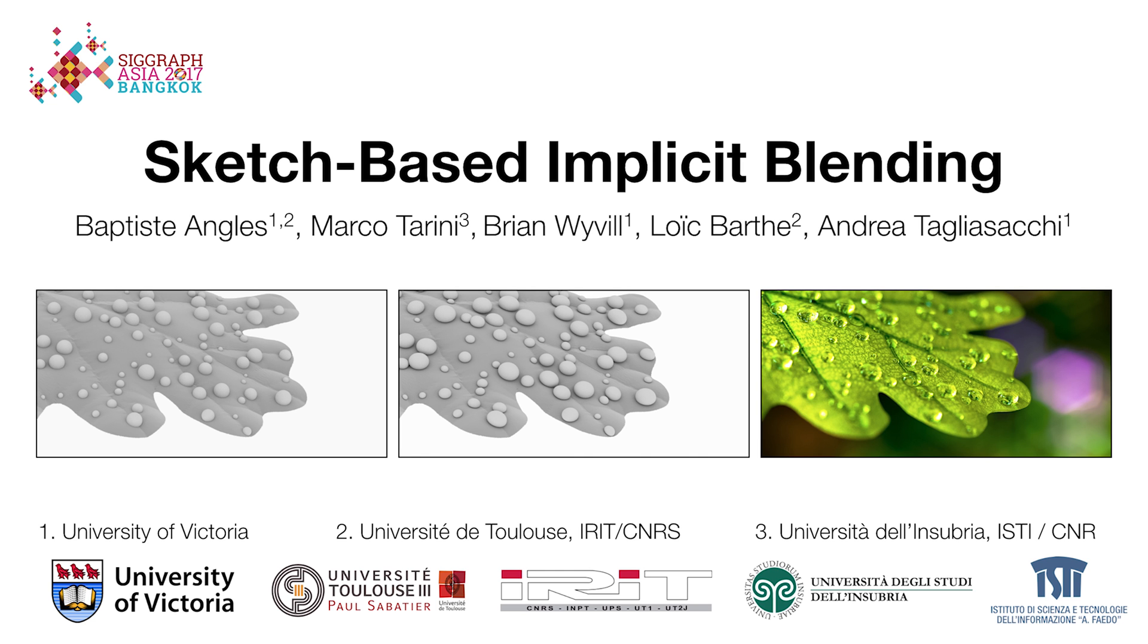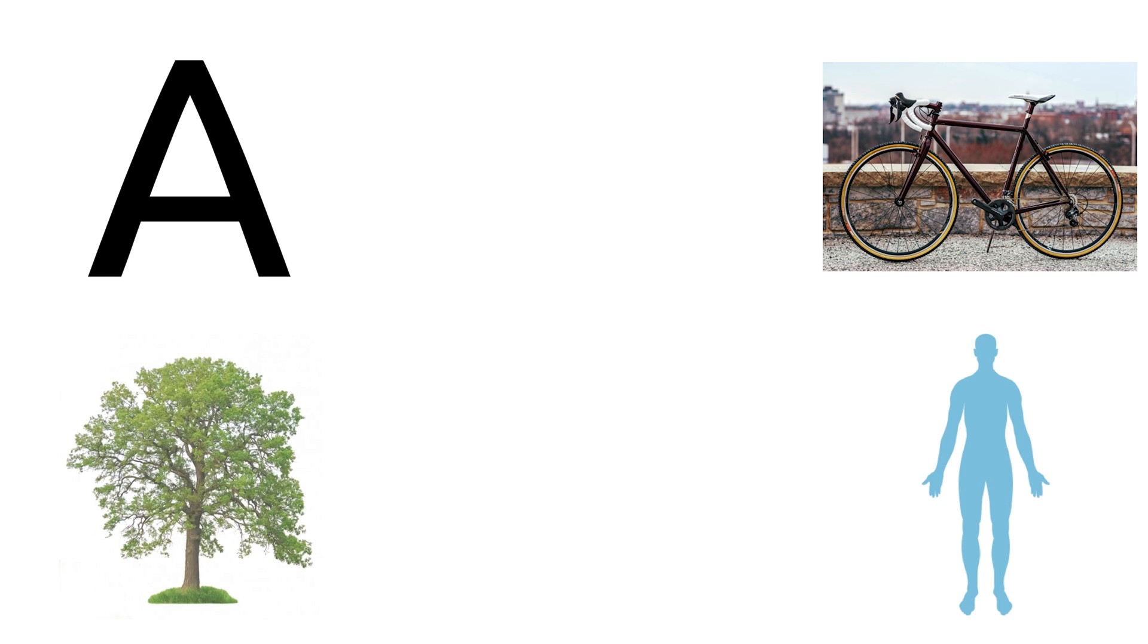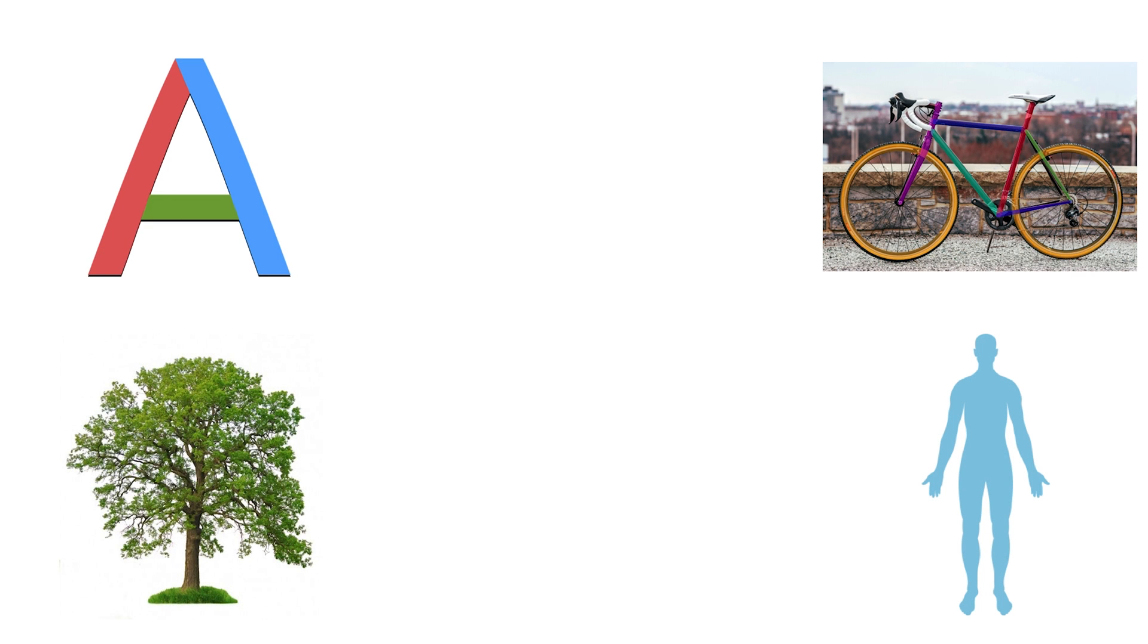We present sketch-based implicit blending. Many complex shapes can be seen as made up of simple primitives. Fonts, man-made objects, bodies and plants are a few examples.